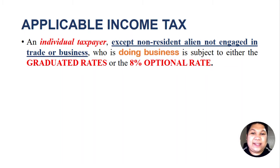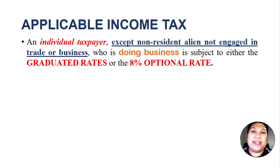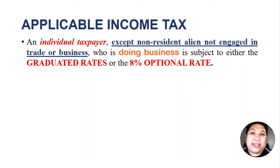This rule is applicable only to four types of individual taxpayers: the resident citizen, the non-resident citizen, resident aliens, and non-resident aliens engaged in trade or business. Those non-resident aliens not engaged in trade or business are subject to a 25% final tax on all their incomes.